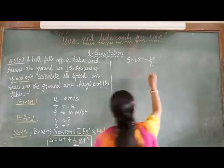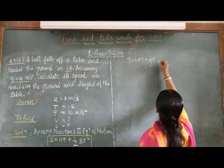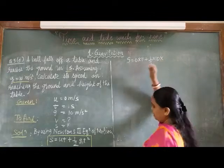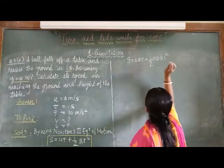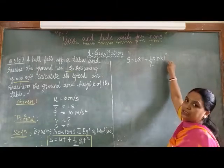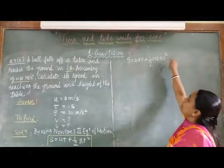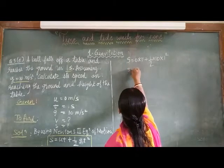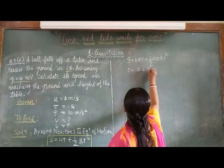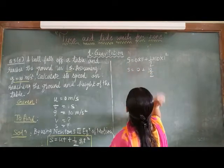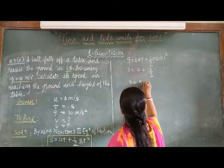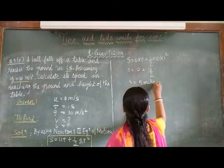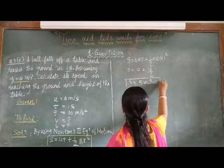So, the value of g is 10, time is 1 second, that is 1 square. 1 into 2, it is not 1 into 2, it is 1 square. So, s equals to 0 plus 10 upon 2. That is, s equals to 5 meters.